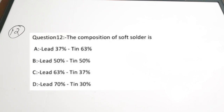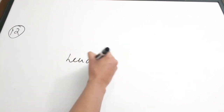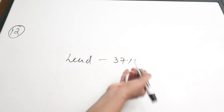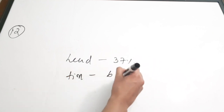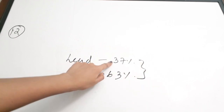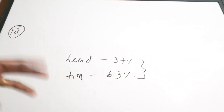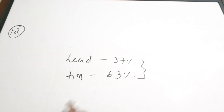Twelfth question: the composition of soft solder is dash. Soft solder, used in soldering wire, has a composition of 37% lead and 63% tin. Due to this specific composition it works effectively as a soldering material. Correct answer is option A.